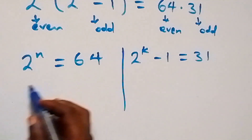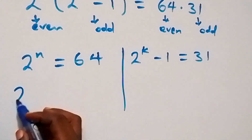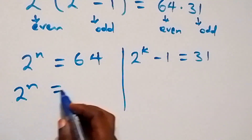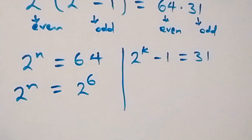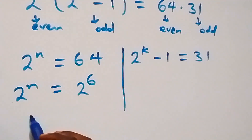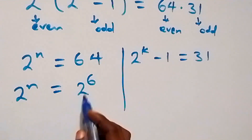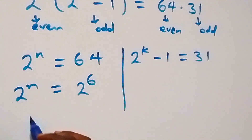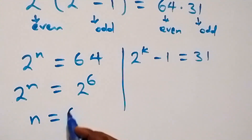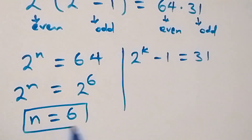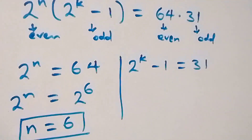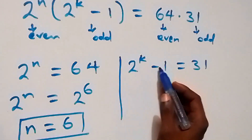We can write 64 as 2 raised to power 6, so 2 raised to power n equals 2 raised to power 6. Since the bases are equal, we equate the powers: n equals 6. To get the value of m, we need to find k first.